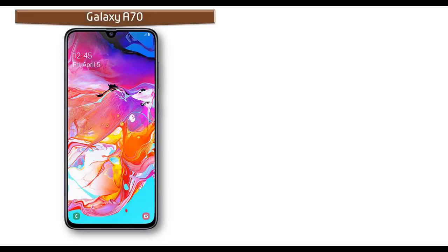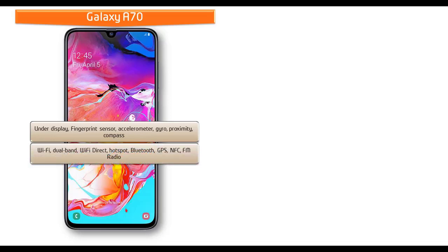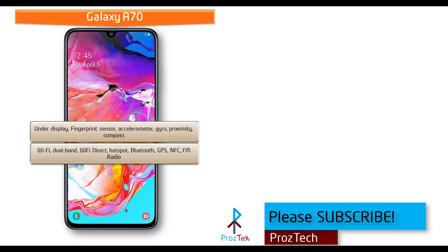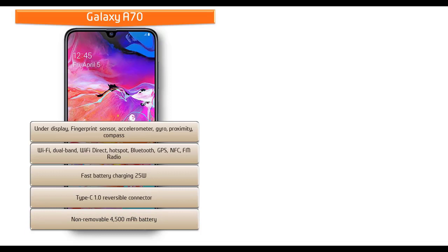In the Samsung Galaxy A70, you can find a fingerprint scanner under the display. This device also comes with sensors like accelerometer, gyroscope, proximity, and compass. On the connectivity side, you can find Wi-Fi, dual band, Wi-Fi Direct, hotspot, Bluetooth, GPS, NFC, FM radio, and a Type-C reversible connector, along with fast battery charging. This phone is powered by a 4500 mAh non-removable battery.